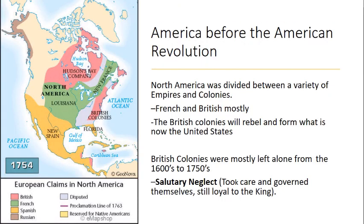Before the American Revolution, you can see this map on the left side — that is what the Americas looked like. In 1492, Columbus sailed across the ocean and Europeans discovered this brand new land. The countries of Europe then colonized these areas: Spain moved into the yellow, the French into the green, and the British into the pink. That pink sliver labeled 'British colonies' is where the American Revolution takes place. The British colonists are going to rebel against the British Empire and fight for their independence.